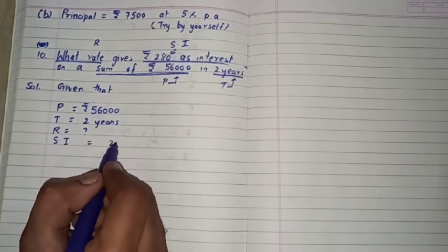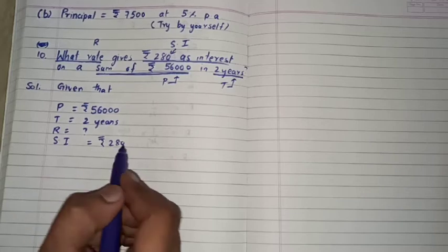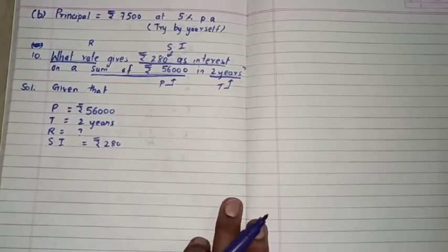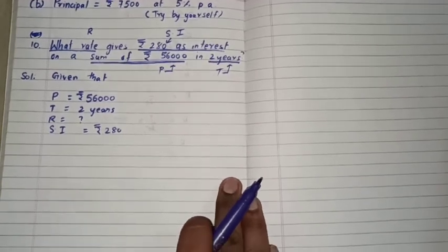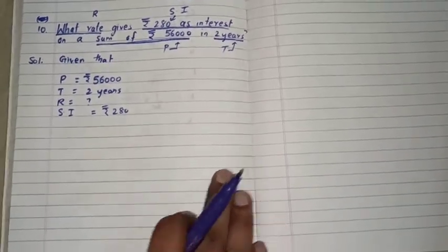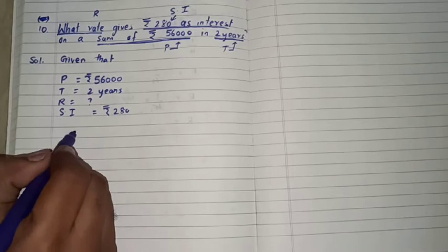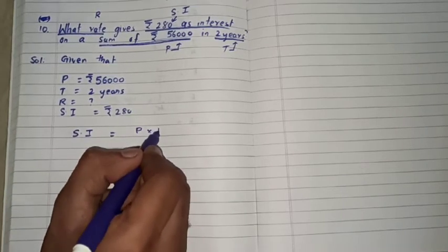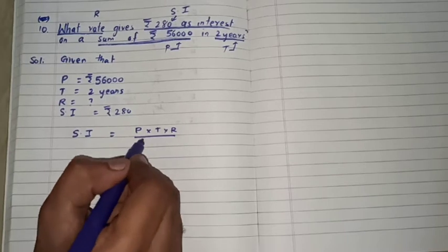Aur ek value humare paas ha simple interest ki toh usko bhi ham likh lhenge, simple interest is equal to rupees 280. Abh isko calculate, rate kaise karenghe, rate ko kaise find karenghe? Ek simple tariha hai ki ham simple interest ka formula use karenghe. Simple interest ka formula kya hai? Simple interest is equal to P into T into R by 100.